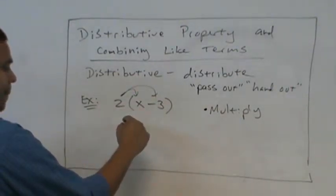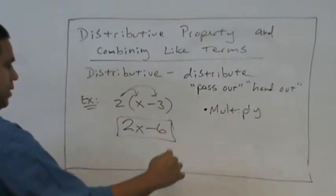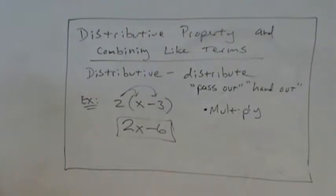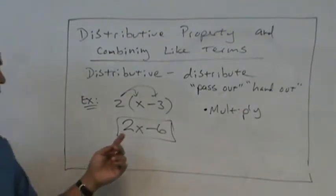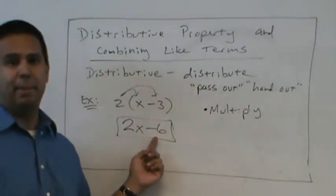So what would we get? 2x minus 6. There you go. Just like that. That's it. Easy. Algebra is easy. So 2 times the x, 2x. 2 times negative 3, negative 6. Done.